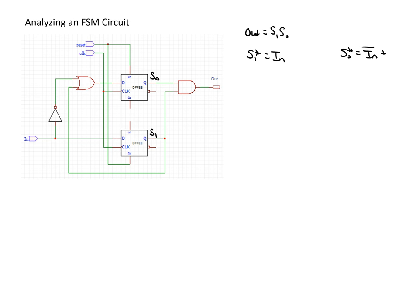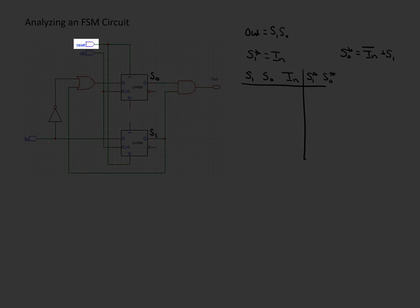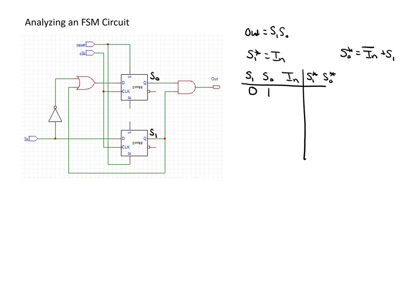From here it's often easiest to create a truth table to deduce how the system moves through different states for different inputs as well as to determine the outputs. We have the two state bits as well as the input bit, and we're interested in what the next state bits will be. To start, we look at the reset signal and see that when it's asserted it goes to the set line of S0, meaning S0 on a reset would be 1, and it goes to the reset input of S1, meaning S1 on a reset would be 0. So this is our initial state.